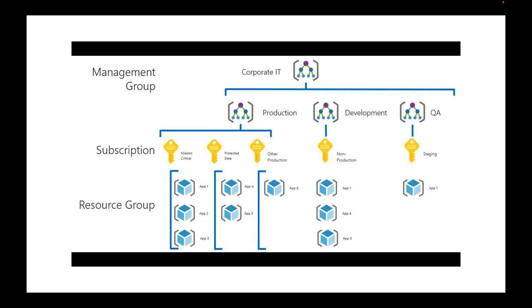Let's get in front of the computer because it'll probably make more sense if I show you with a slide. This first diagram — what I'm showing you is pulled from Microsoft's site. At the top it says corporate IT, then you have different management groups: production, development, and Q&A. Below your management groups you have your subscriptions — mission critical, protected data, other production within the production management group, and non-production in the development management group.